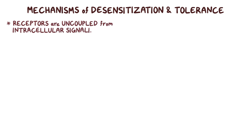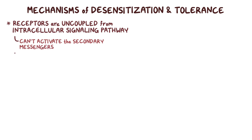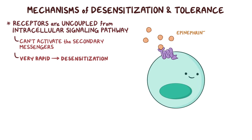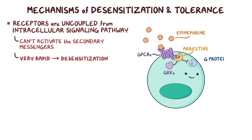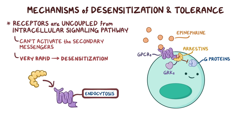Alternatively, the receptors may be modified where they are uncoupled from their intercellular signaling pathway, meaning they can't activate the secondary messenger proteins anymore. This type of response is very rapid and mainly causes desensitization. When exposed to high doses of epinephrine, G-protein coupled receptors, or GPCRs, get phosphorylated by intercellular enzymes called G-protein coupled receptor kinases, or GRKs. The phosphoryl groups then get bound by bulky proteins called arrestins, which prevents the receptor from activating their neighboring guanine nucleotide-binding proteins, or G-proteins. At the same time, arrestins tag the receptors for endocytosis, reducing the number of receptors on the cell membrane.